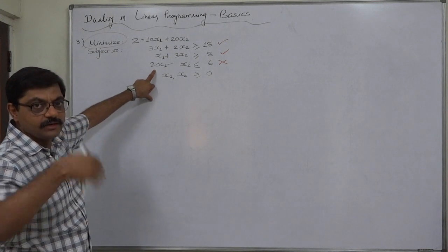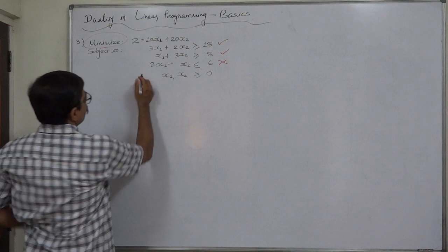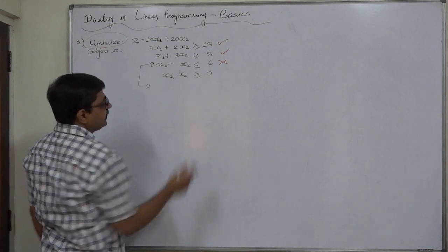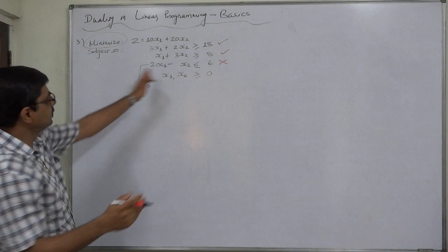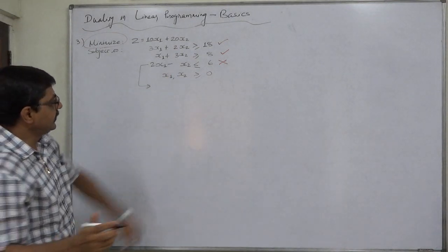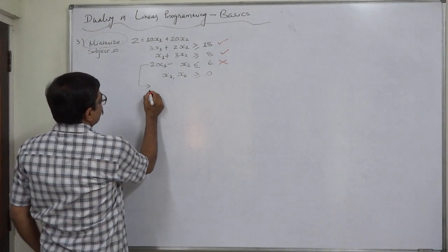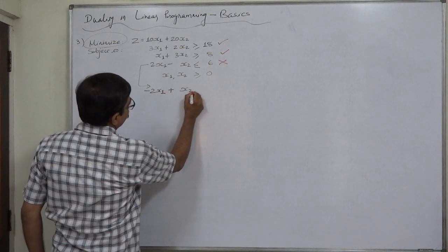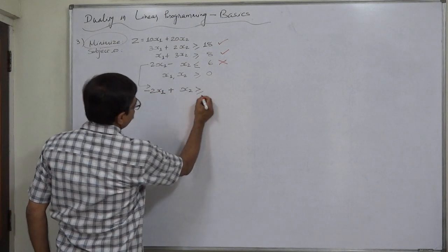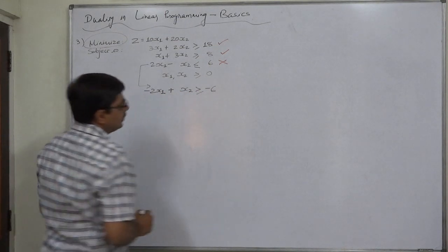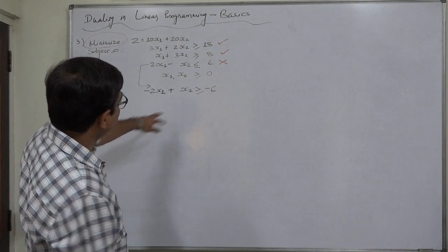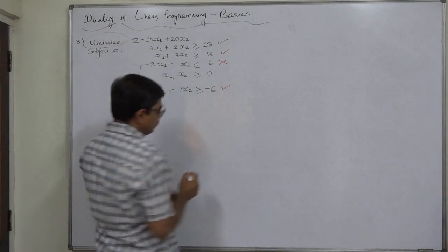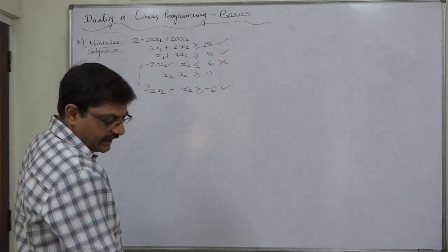So what will happen? First, we have to change the sign of this constraint into greater than or equal to. What is going to happen is the sign of all the factors in the constraint will become opposite. So it becomes: minus 2x1 plus x2 greater than or equal to minus 6. Now the sign of this constraint is matching with the objective.